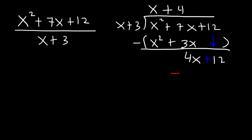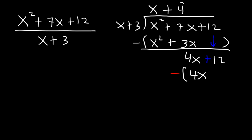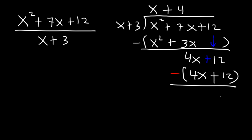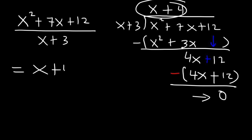Divide again: 4x divided by x is positive 4. Multiply: 4 times x is 4x, and 4 times 3 is 12. Subtract: 4x minus 4x is 0, and 12 minus 12 is 0. The remainder is 0, so the answer is x plus 4. Therefore, x squared plus 7x plus 12 divided by x plus 3 equals x plus 4.